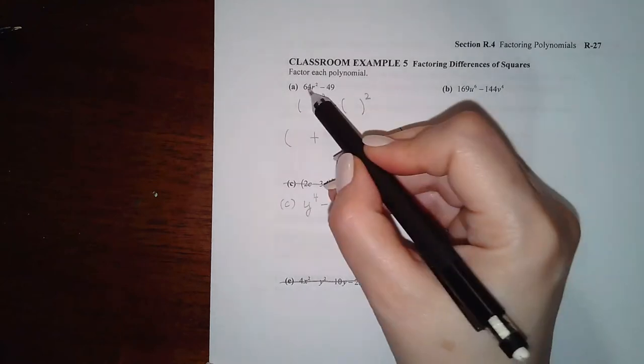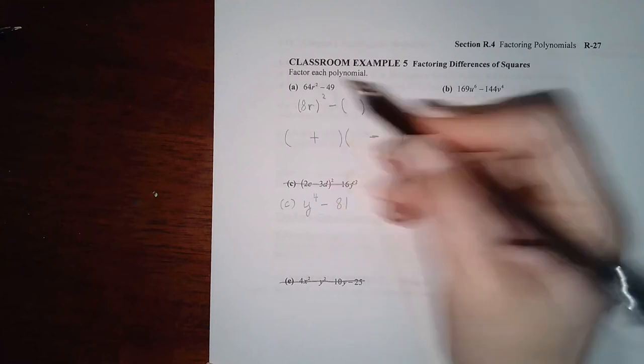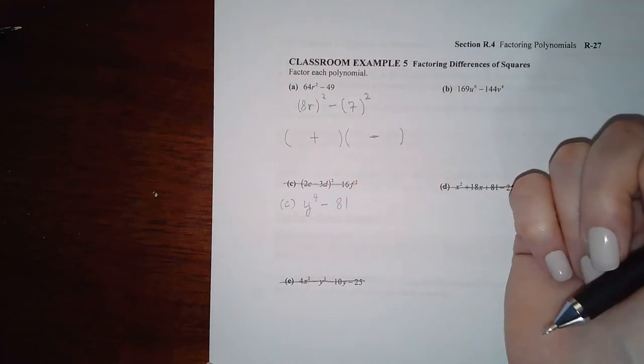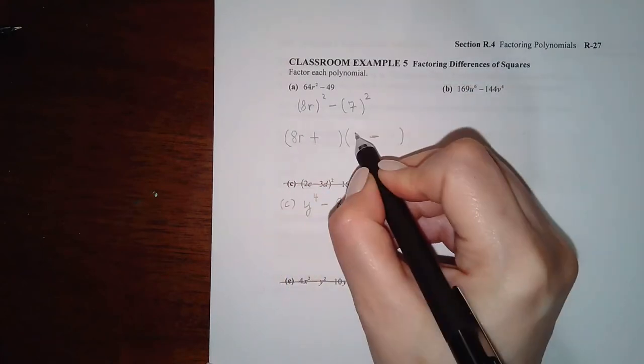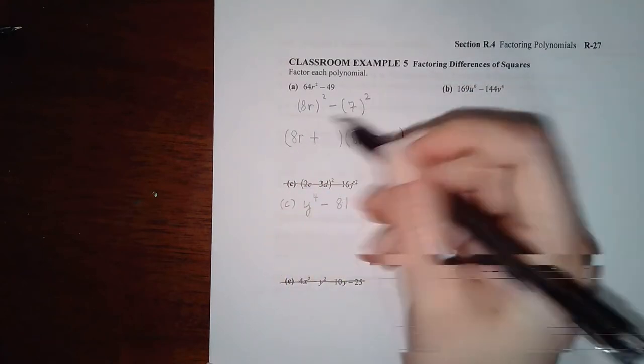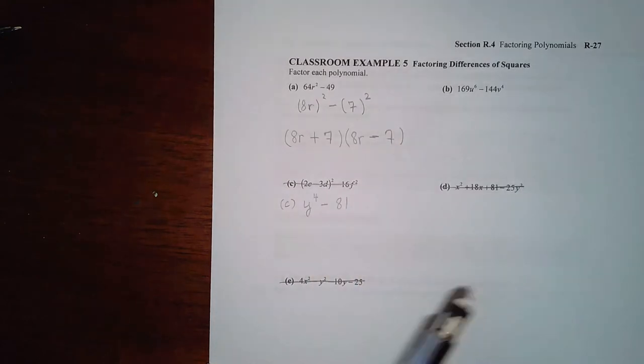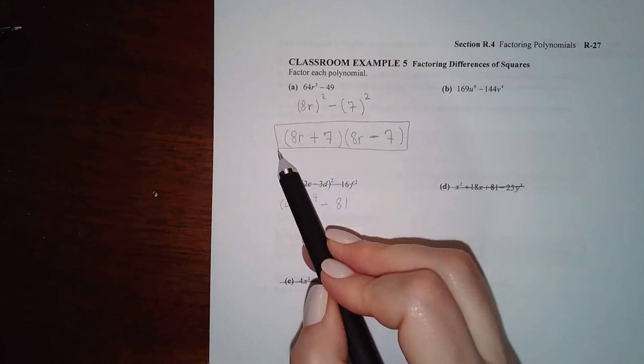Okay, so here I notice that 8 times 8 is 64 and r times r is r squared. Here I notice that 7 times 7 is 49. So that means in the front of my parentheses I should have an 8r and in the back of my parentheses I should have a 7. And then one of these factors should have a plus and the other factor should have a minus. And that's it. You can multiply this out, combine your like terms, and you will get the original.